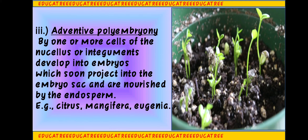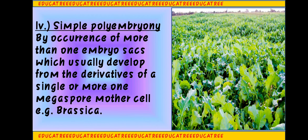When embryo development occurs from either the nucellus or the integument, we call it Adventive Polyembryony. An important feature is that once the embryo develops, it quickly enters the embryo sac and helps in the nourishment of the endosperm. Adventive Polyembryony can be seen in Citrus, Mangifera, or Eugenia — as shown in the figure demonstrating how embryos arise in Adventive Polyembryony.